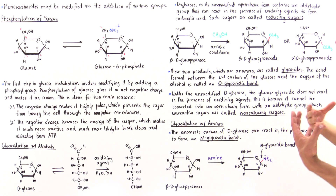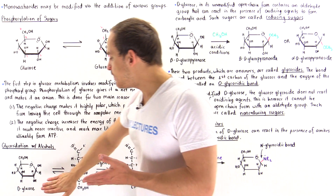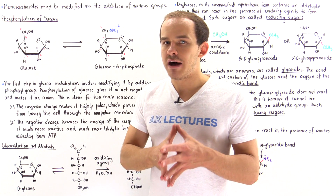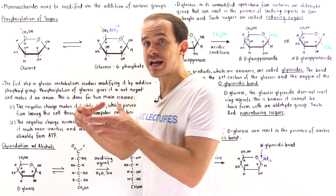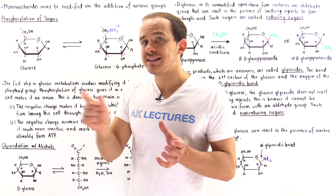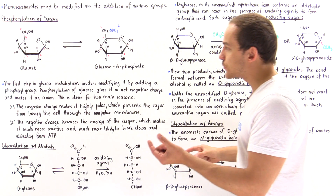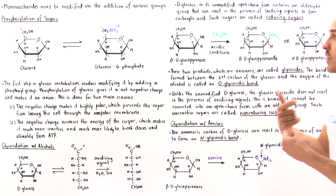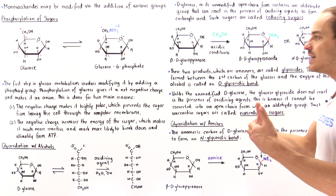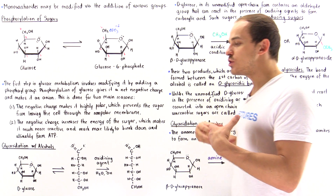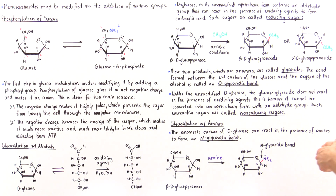Inside our cells, under certain cases we want to keep glucose in its unmodified form so we can react glucose to form a bond. But under certain circumstances, we want to transform glucose into a glycoside to prevent it from reacting with other types of reactive oxidizing agents.